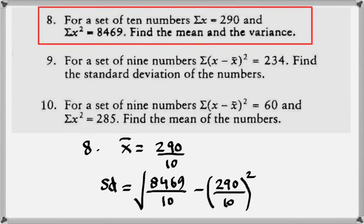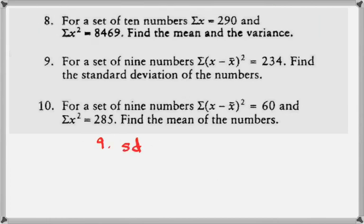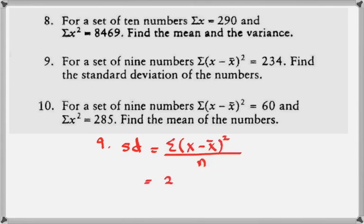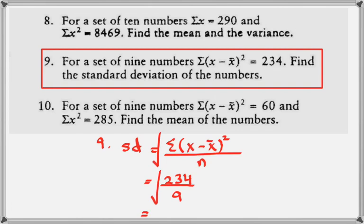Find the mean and variance — simple usage of x̄ and SD formulas; use a calculator and get the answer. Now look at question number 9: for a set of 9 numbers, Σ(x − x̄)² = 234. The first alternative formula will be used here. n = 9, the value in sigma notation is 234; divide 234 by 9, take the square root, and you will find the standard deviation.